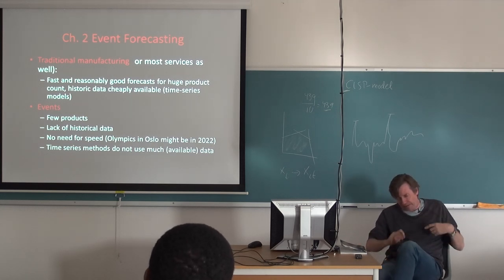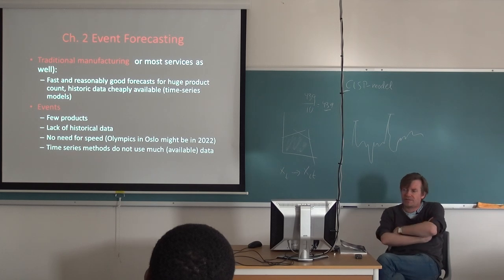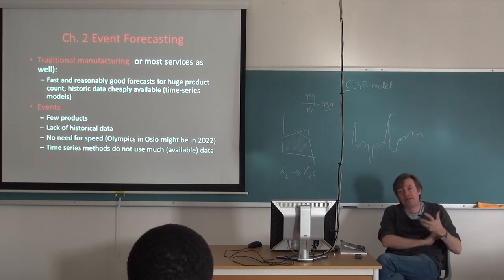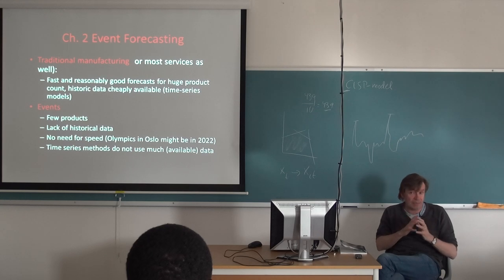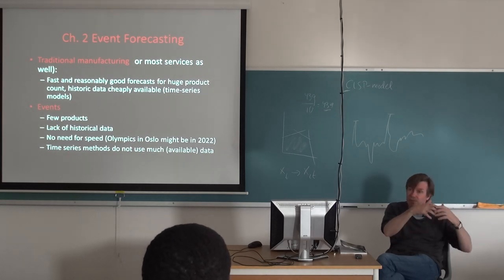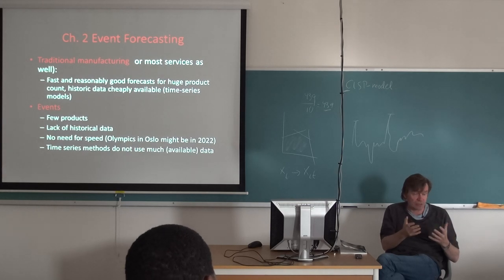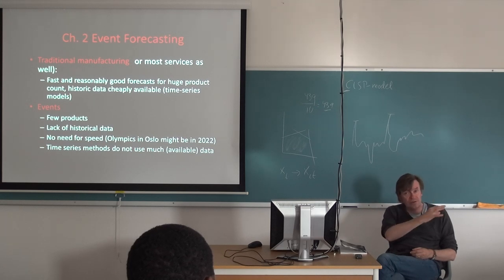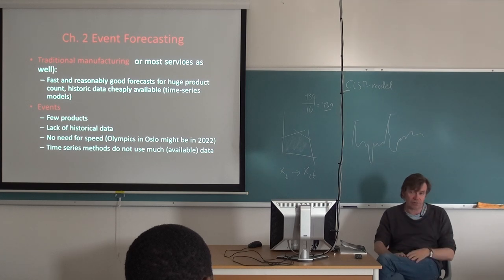Finally here, it says time series methods do not use much available data. Of course they use demand data. You use the demand data itself to build your models. But there is a lot more data available. Even though I say that we may not compare Vancouver or Lillehammer, there is some information available which we can use and which we maybe should use. And the idea as we move along now is to give you some examples from the local scene here. How we could actually use available data to adjust our forecasting models to make them better. And it's relatively easy actually. So let's look at an example here.